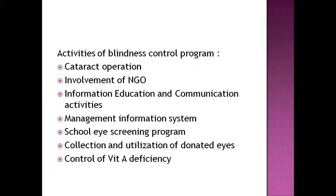Activities of the National Blindness Control Program include cataract operations, involvement of NGOs, information education and communication — where information regarding blindness is provided in poster and pamphlet form in local languages so every educational level can receive it — school eye screening programs since children are also at risk, collection and utilization of donated eyes, and control of vitamin A deficiency through supplementation or dietary sources.